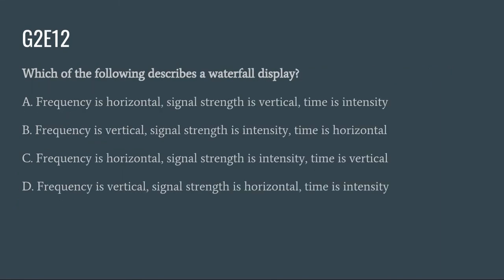G2E12: Which of the following describes a waterfall display? A. Frequency is horizontal, signal strength is vertical, and time is intensity. B. Frequency is vertical, signal strength is intensity, and time is horizontal. C. Frequency is horizontal, signal strength is intensity, and time is vertical. Or D. Frequency is vertical, signal strength is horizontal, and time is intensity. The correct answer is C: frequency is horizontal, signal strength is intensity, and time is vertical.